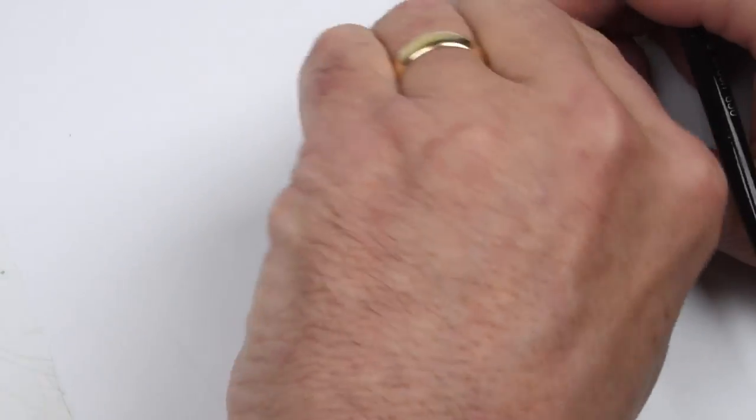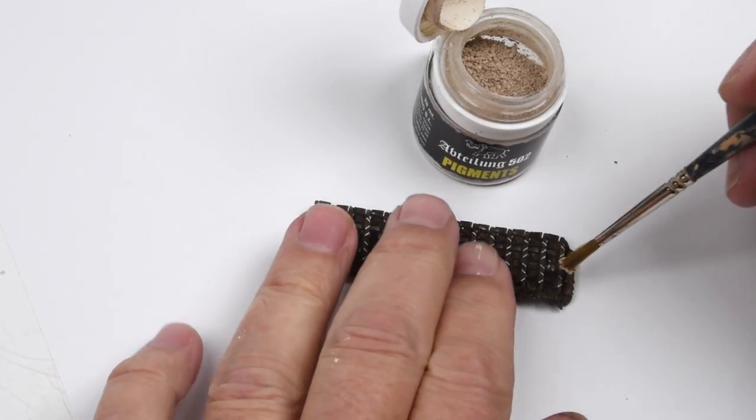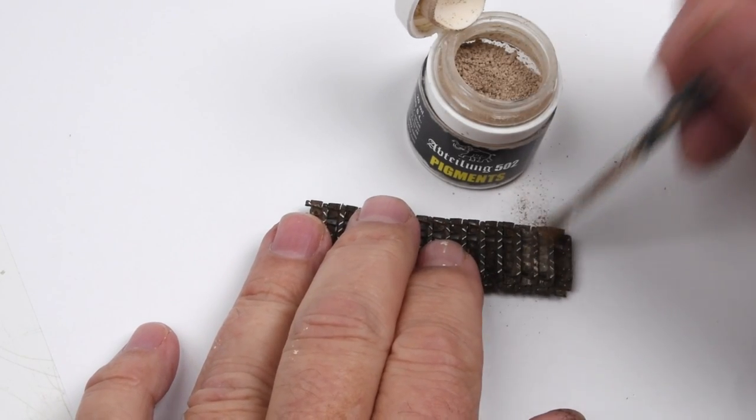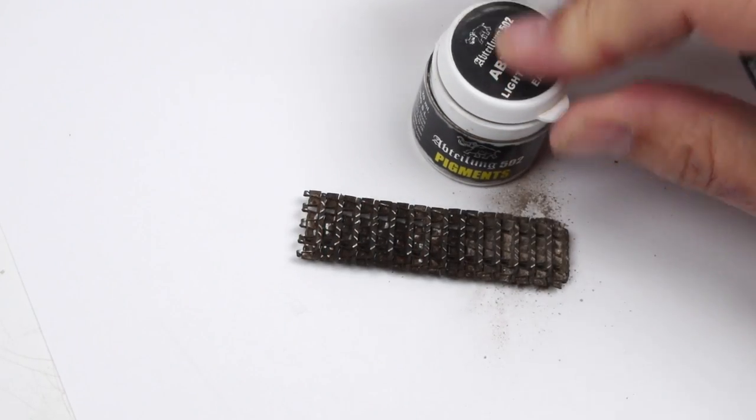At this point, the tracks could be installed onto our model and we could be very satisfied. But perhaps we're trying to tie it into a diorama or vignette scene. Perhaps we'd like to show a little weathering. Pigments are a great option here to add some light dust or perhaps even light mud effects.